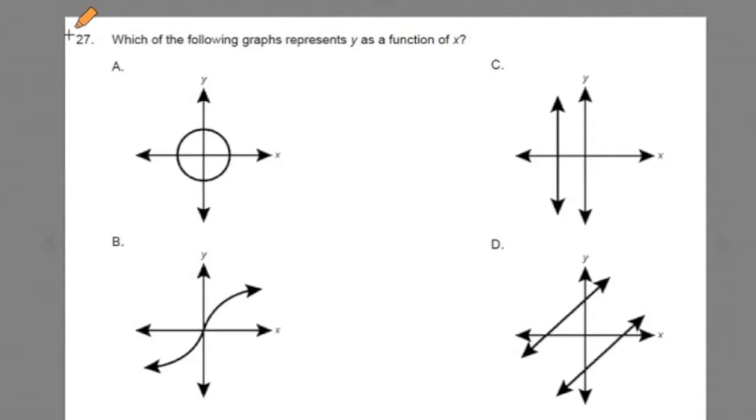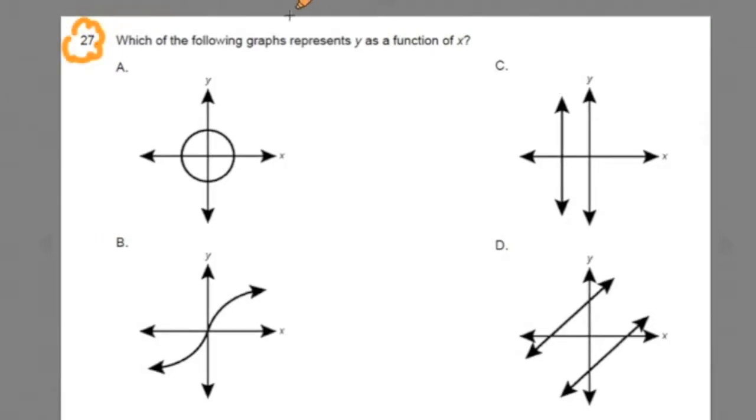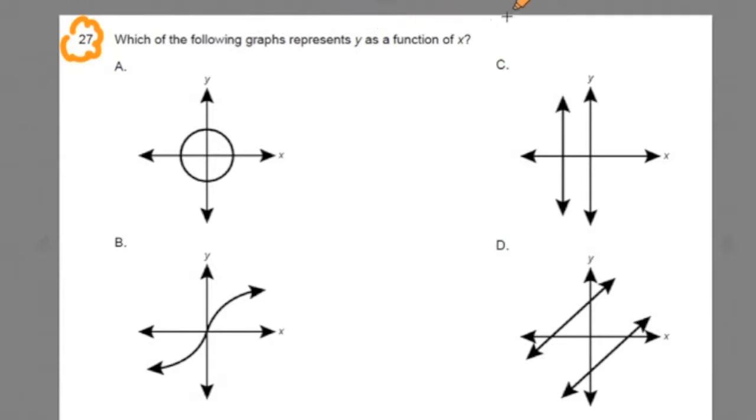Number 27 from the general curriculum exam reads like this: Which of the following graphs represents y as a function of x? It's a very common type of question where they give you four graphs, and they ask you which one of these graphs, a, b, c, or d, is a function.